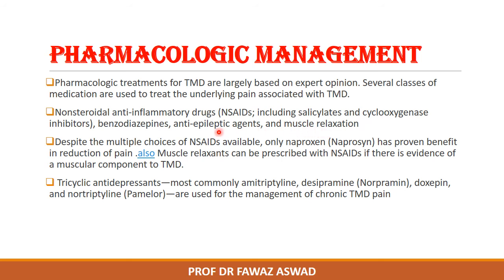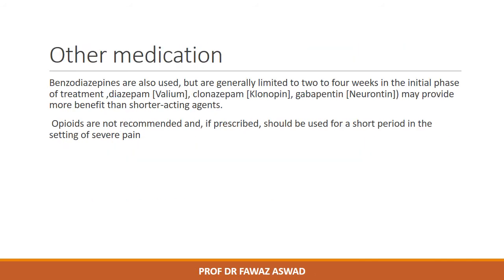These medications are used for patients with chronic TMJ pain or myofascial pain. Naproxen is the most commonly used NSAID and has a proven effect in reducing pain. Benzodiazepines are generally limited to two to four weeks in the initial phase of treatment. Benzodiazepines and carbamazepine may provide benefit but are short-acting and should be used only for short periods in settings of severe pain.